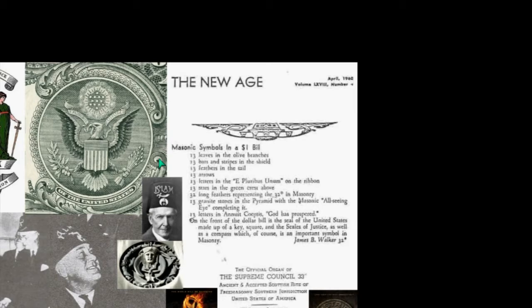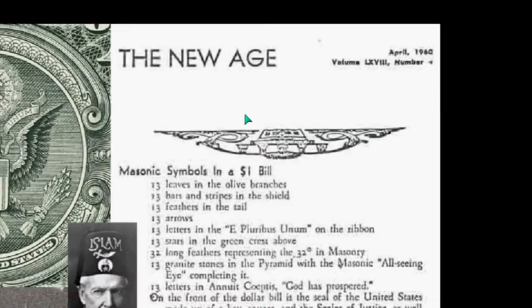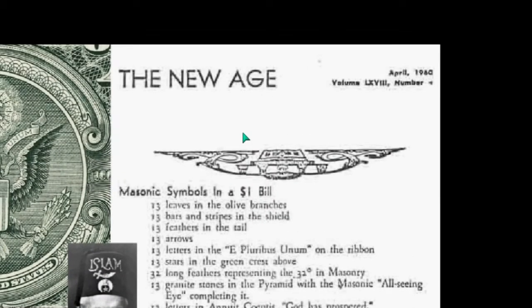Revelation 13 is about rebellion, and in Genesis 14 we have 12 years they served, and the 13th they rebelled. As an architect, we don't even put the 13th floor in a building because it has such a negative connotation. This is the New Age magazine, which is the Freemasonic magazine — it has since been changed to the Scottish Rite magazine.